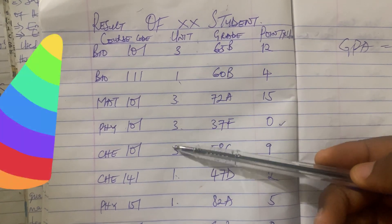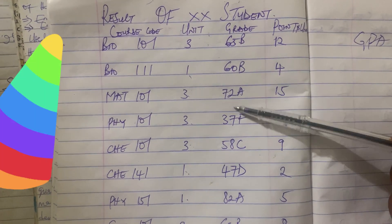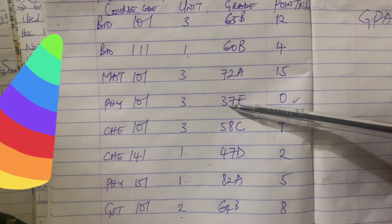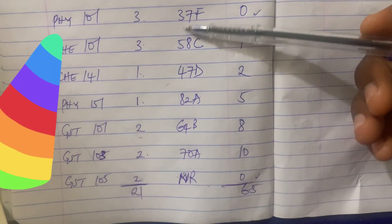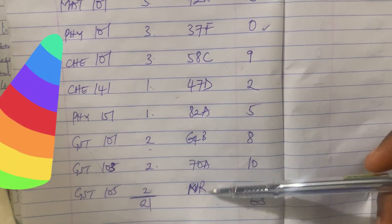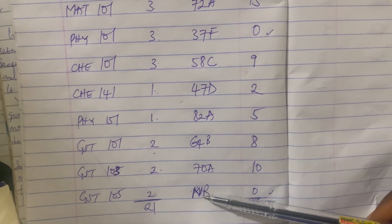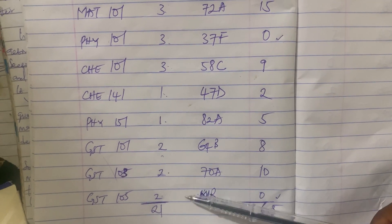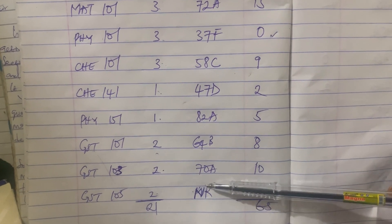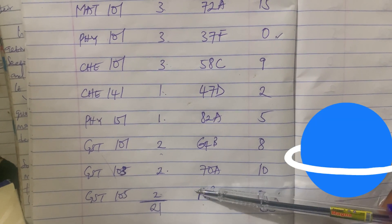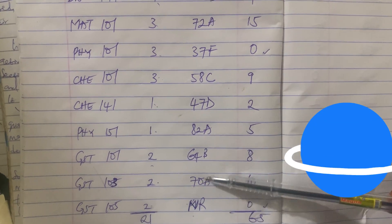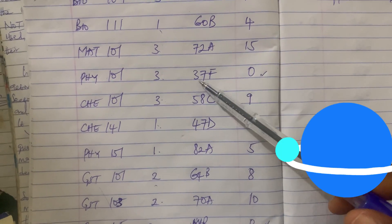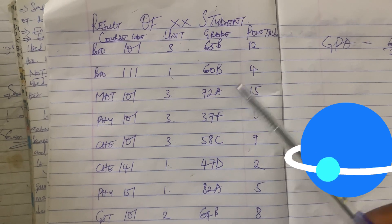We have different units for these courses and these are the grades. Adachi failed Physics 101, which is a three-unit course, and she had a missing script — this is one of the dilemmas of Nigerian students. After writing exams you can have a missing script, and what will be denoted here is NR, which means No Result. So that means she is going to be rewriting GST 105 and Physics 101 in her first semester Year 1.